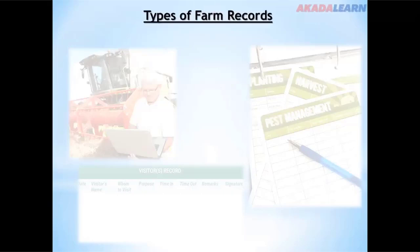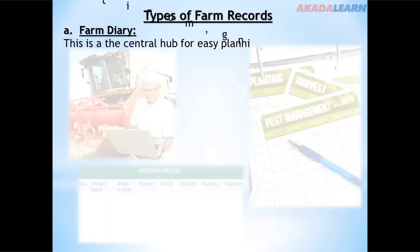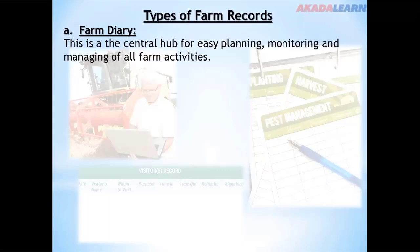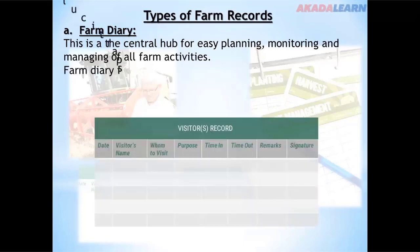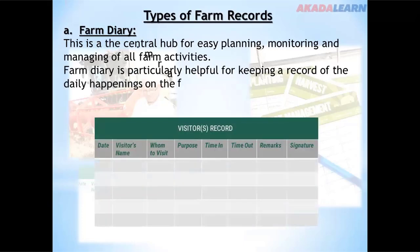Types of farm records: first, we have the farm diary. The farm diary is a central hub for easy planning, monitoring, and managing of farm activities. It is particularly helpful for keeping a record of the daily happenings on the farm.